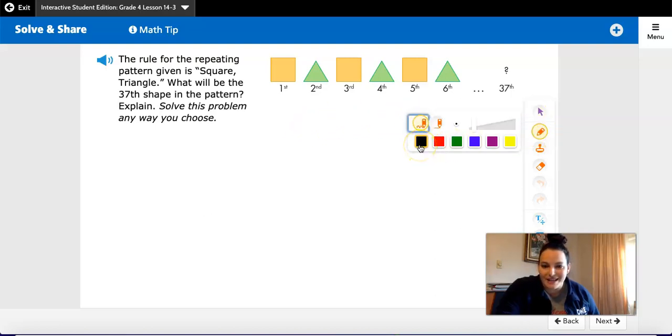Okay. Are you ready? So I have square, triangle, square, triangle, square, triangle. You could have drawn all of the shapes up until the 37th place and found that a square is the correct answer.